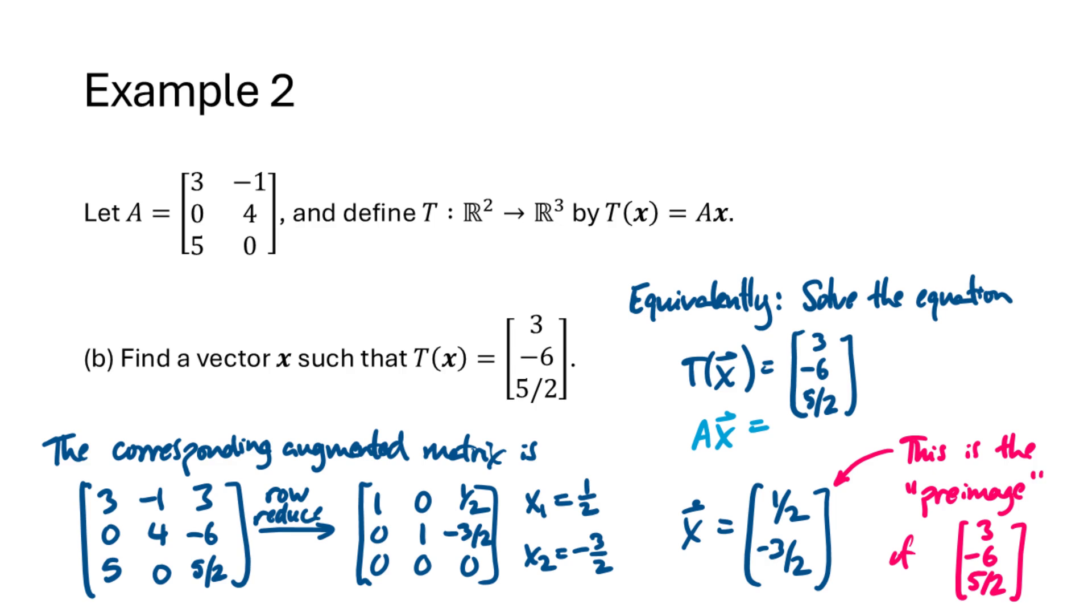And sometimes we use the word pre-image here to say that x is the pre-image of the vector that we were given, 3, negative 6, 5 halves. So 3, negative 6, 5 halves is the image of 1 half, negative 3 halves. And 1 half, negative 3 halves is the pre-image of 3, negative 6, 5 halves. These are just ways to describe the relationship between these two vectors.